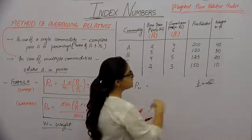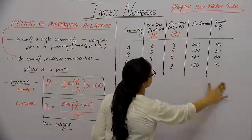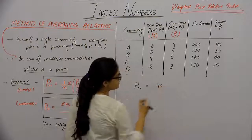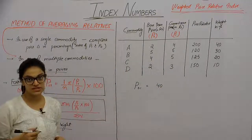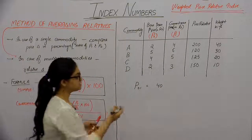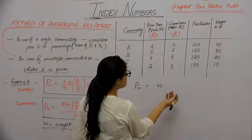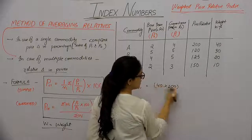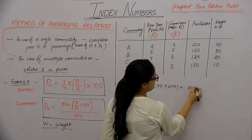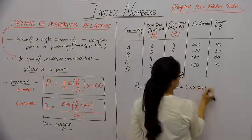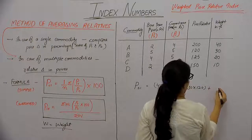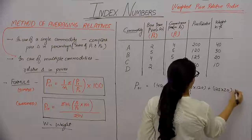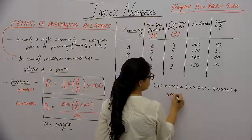We calculate all price relatives this way. Then we multiply the price relative values by their respective weights. To find the weighted price relative index: multiply 40 by 200, plus 30 by 120, plus 20 by 125, plus 10 by 150.